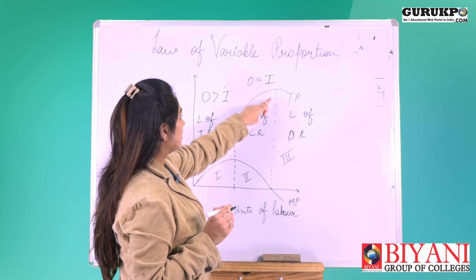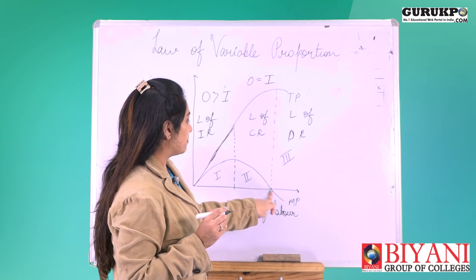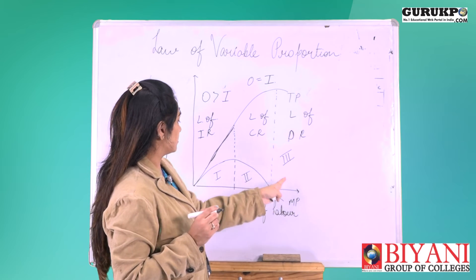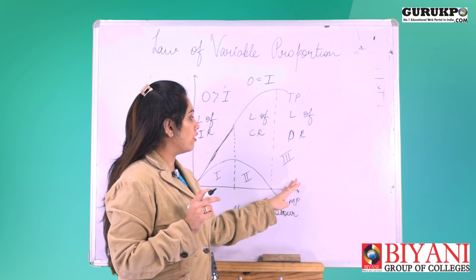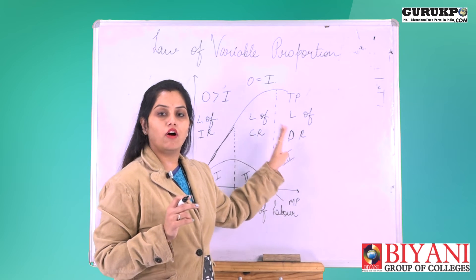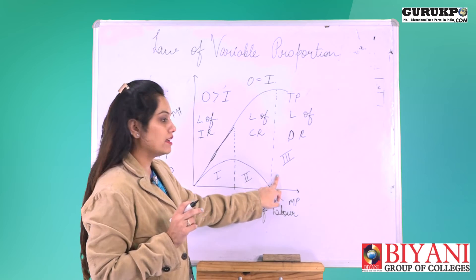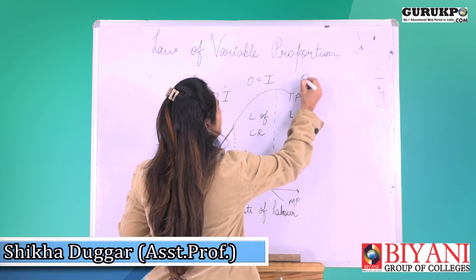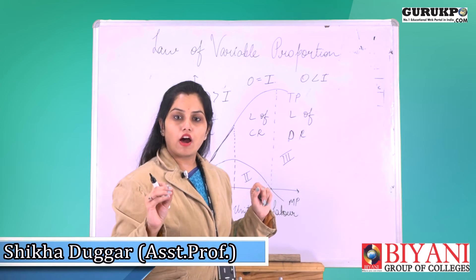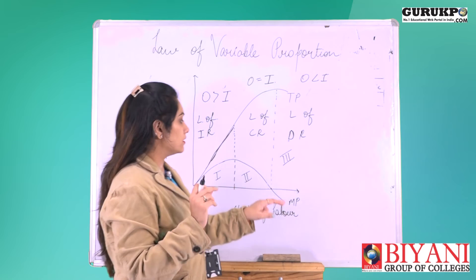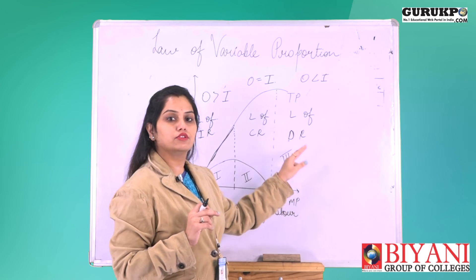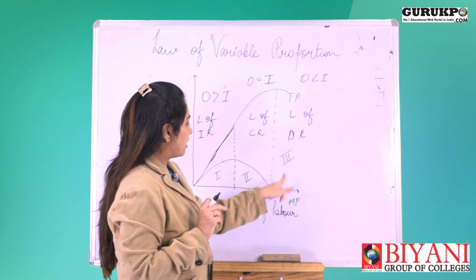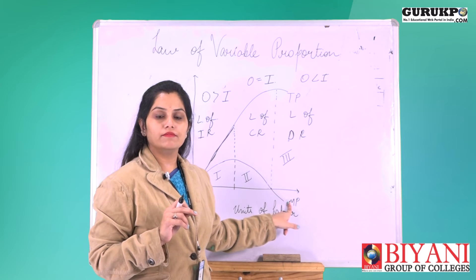This stage comes to an end when TP reaches its maximum and MP becomes zero. Then starts the third stage — the law of diminishing or decreasing returns to factor. When the output is less than the change in input, this is the law of decreasing returns. In this stage, TP starts declining and MP becomes negative.